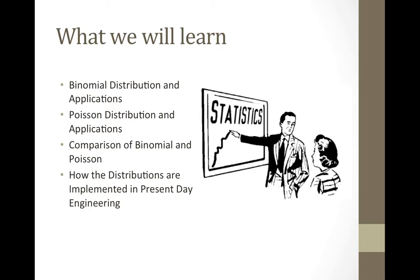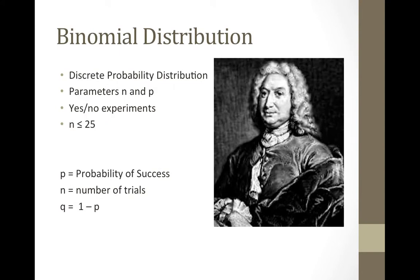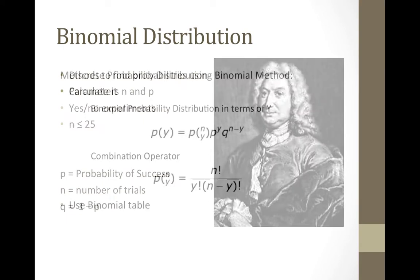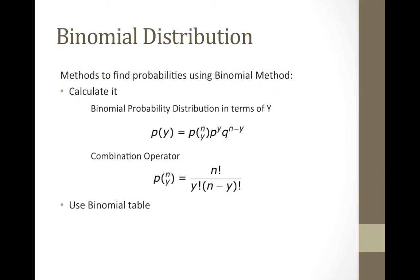Let's begin. Binomial distribution, created by James Bernoulli, was given the name binomial because the root of the word means two names. It was given this name because every probability distribution has success and failures, or independent yes or no experiments. The parameters of this distribution are given by n, the number of trials, and p, the probability of success, where the number of trials has to be twenty-five or less for the outcome to be accurate.